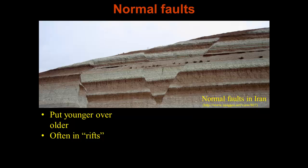An important thing about normal faults is that they bring younger rock down over older. We often see them in rifts and they are formed under conditions of continental extension. Here are these really beautiful brown and white layers from Iran that show this nice down-dropping of central blocks bounded by two inward-dipping normal faults, where younger rocks have come down and are juxtaposed against the older ones.